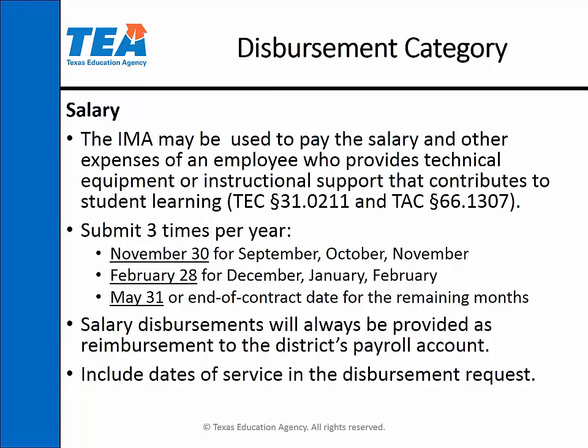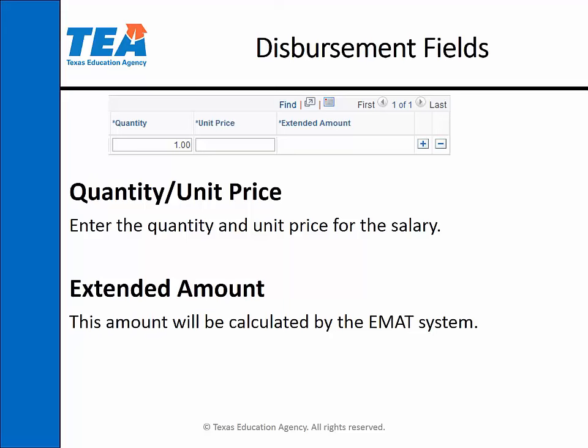Include the dates of service in the disbursement request. In the first field, you will enter the dates of service. Enter a detailed description of the service being provided in the service description field. Then choose the service audience from the drop-down menu. Enter the quantity and unit price for the salary, and the extended amount will be calculated for you by the EMAT system.